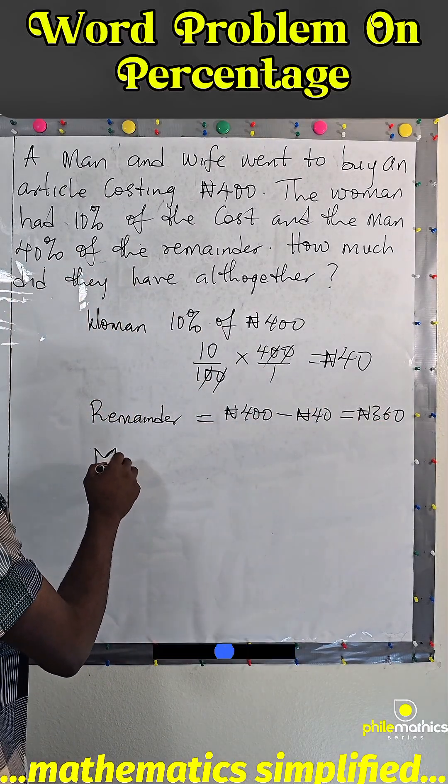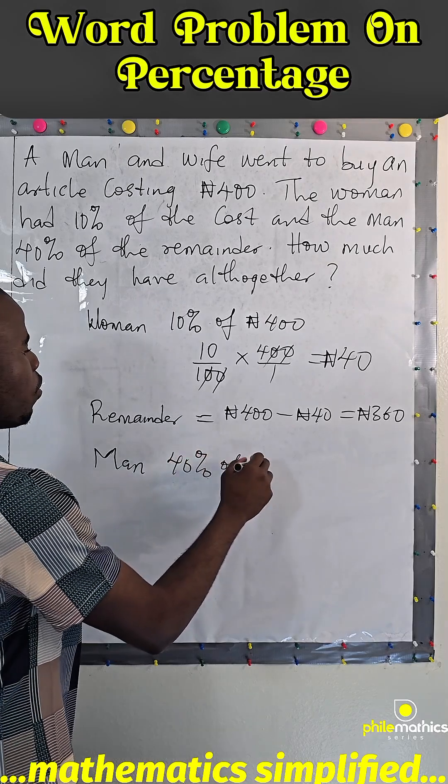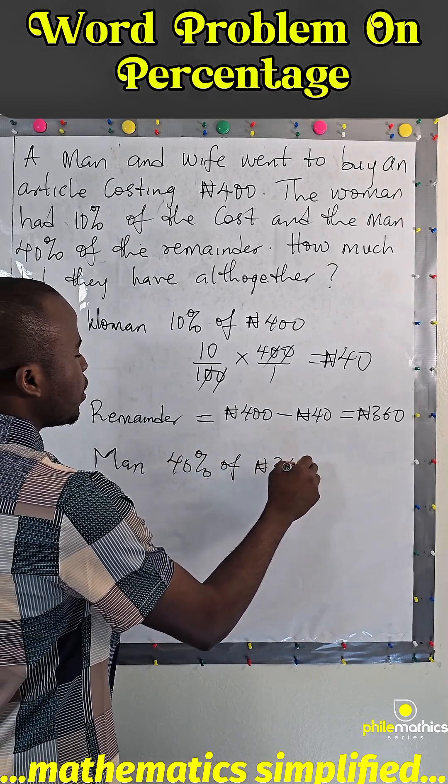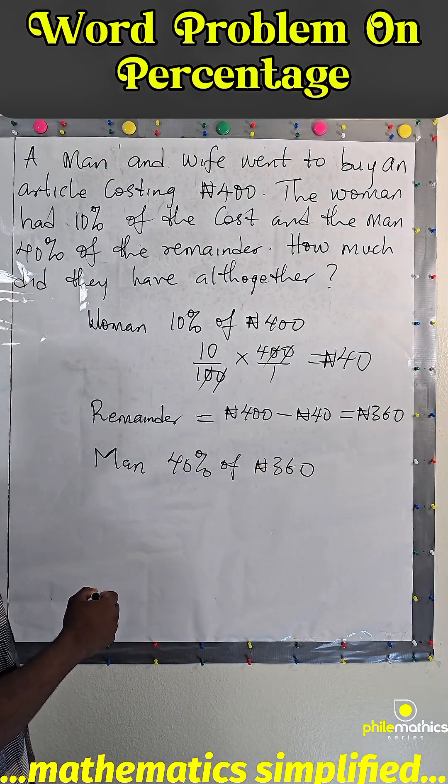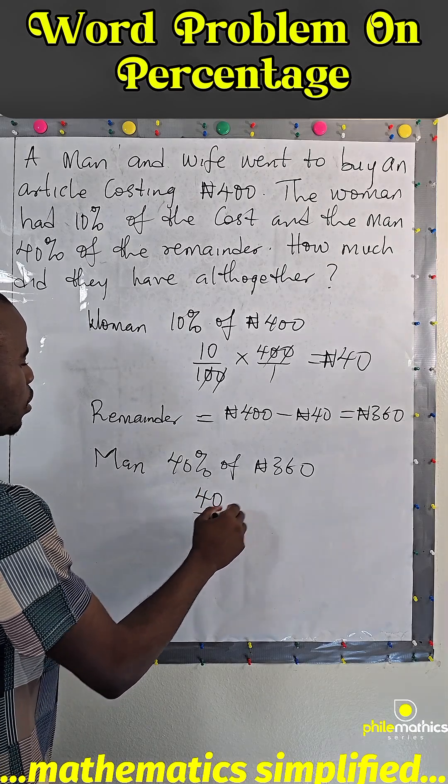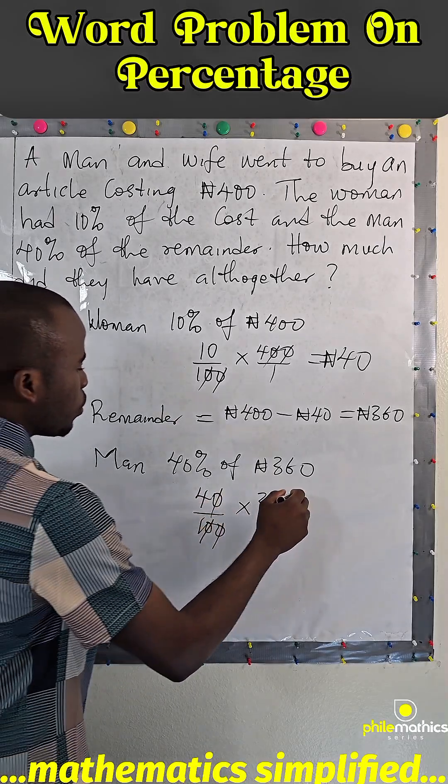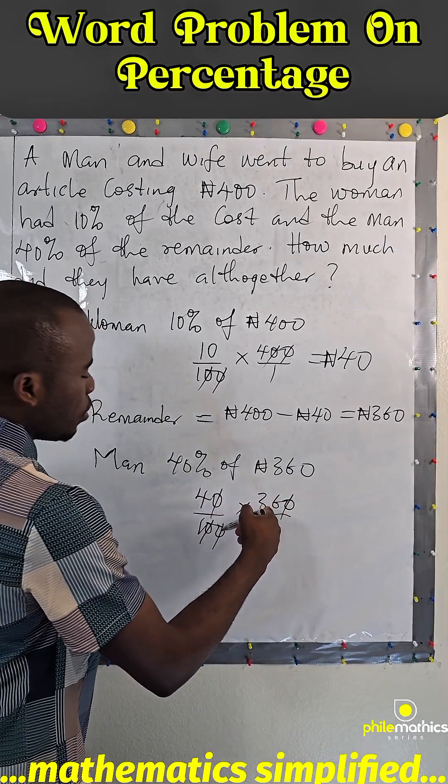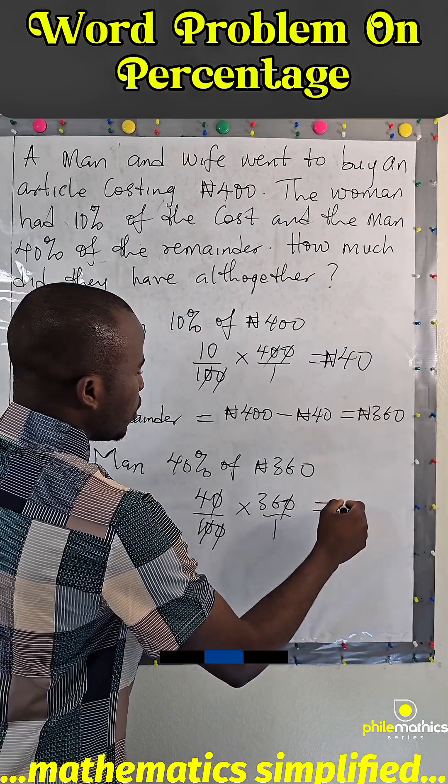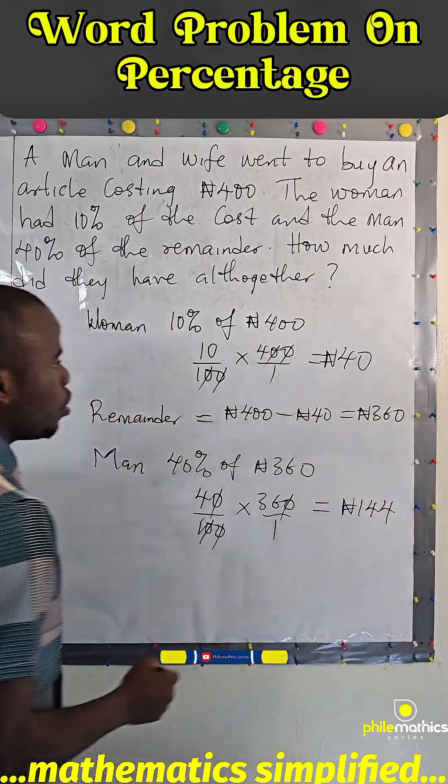Now the man, we are told, had 40 percent of this remainder. So the man had 40 percent of ₦360, and 40 percent of ₦360 simply means 40 over 100 times 360 over 1. 0 cancel 0, 0 cancel 0. 4 times 36 is ₦144.